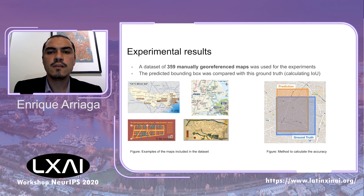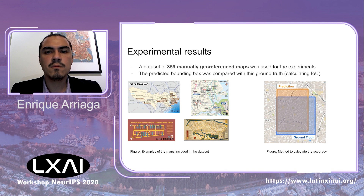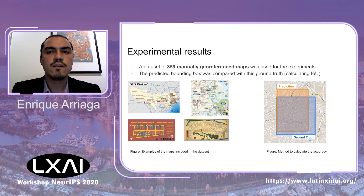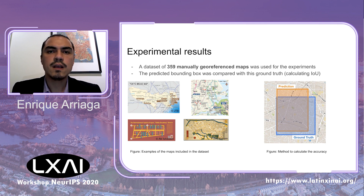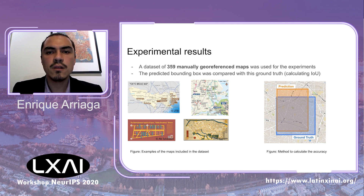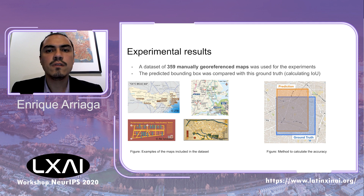For these experimental results, we use a dataset of 359 map images that were manually georeferenced by a human expert, and we use this as the ground truth. We then calculate the IOU between this bounding box and the one predicted by the algorithm, using a threshold of 0.2.